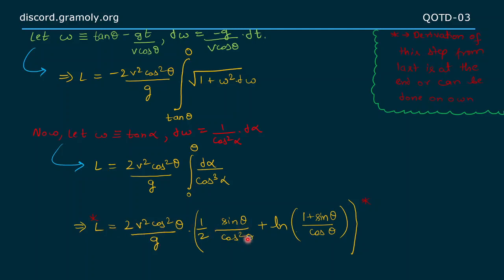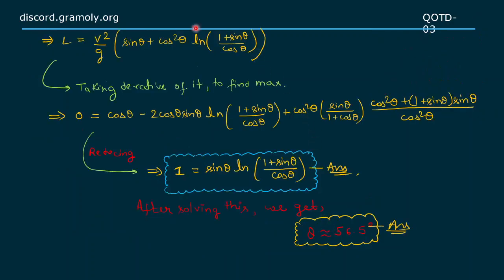Upon further solving, we get this expression as: length of trajectory equals v² upon g times (sin θ plus cos² θ times log of 1 plus sin θ upon cos θ).